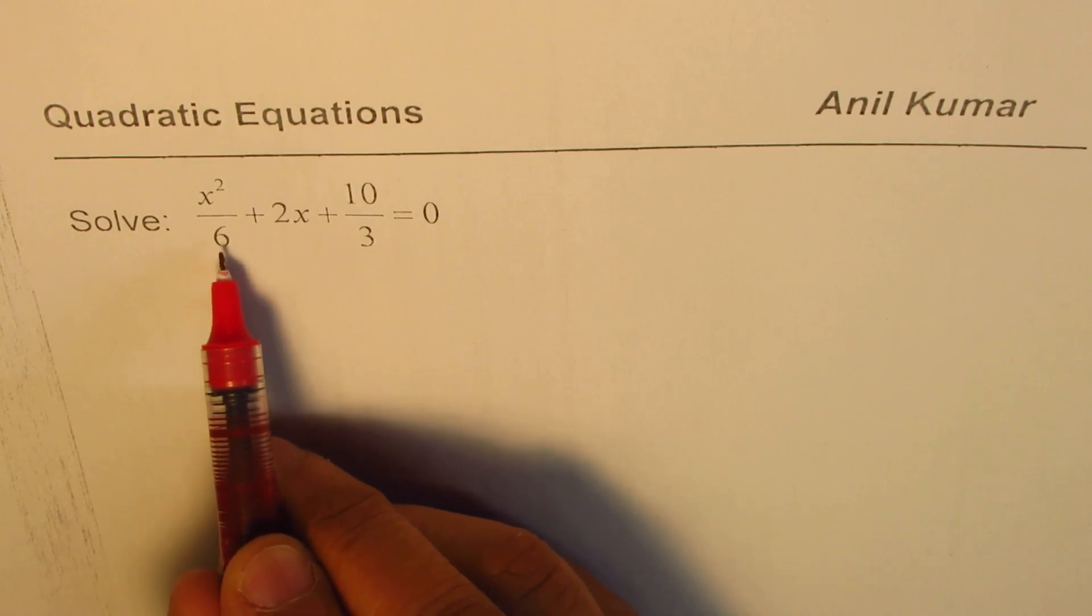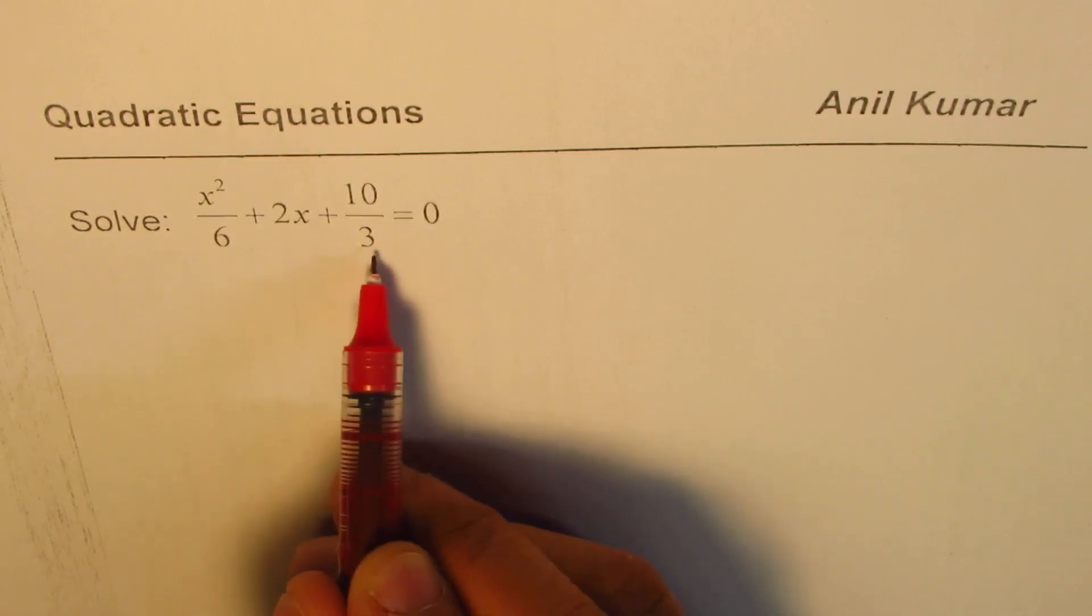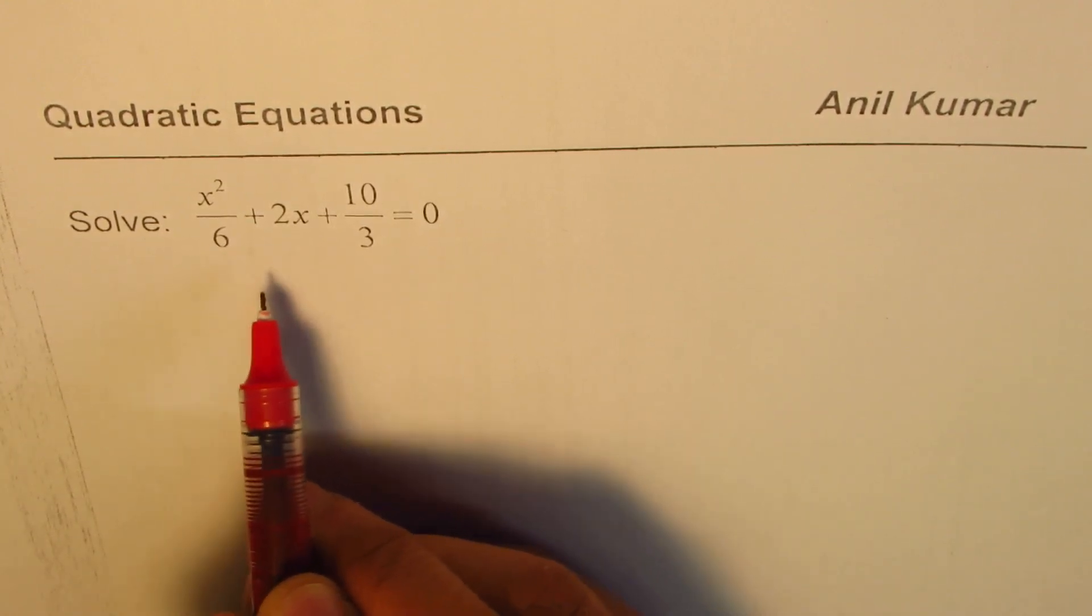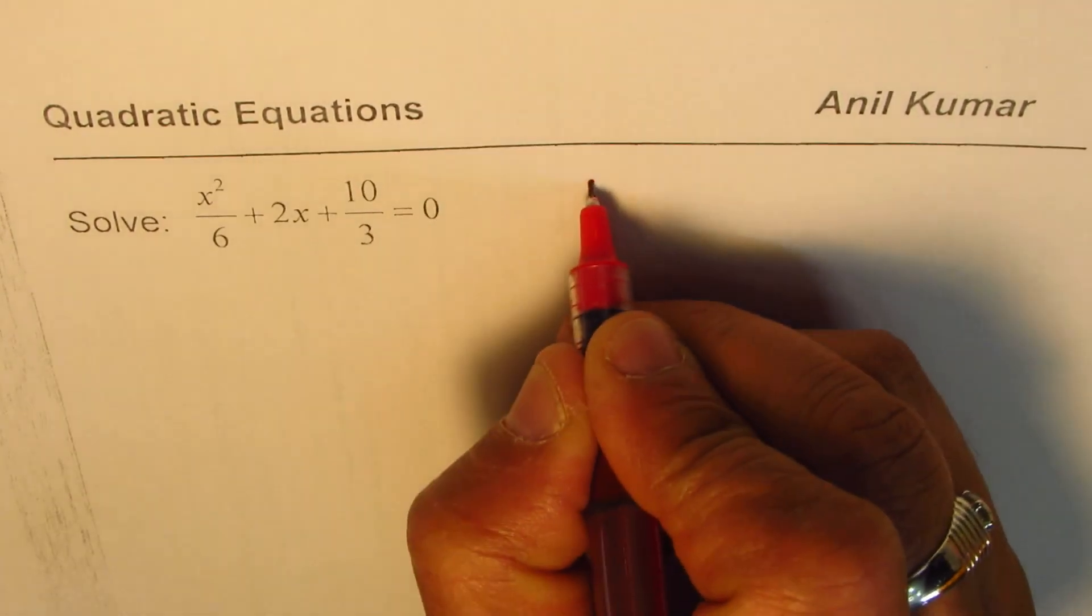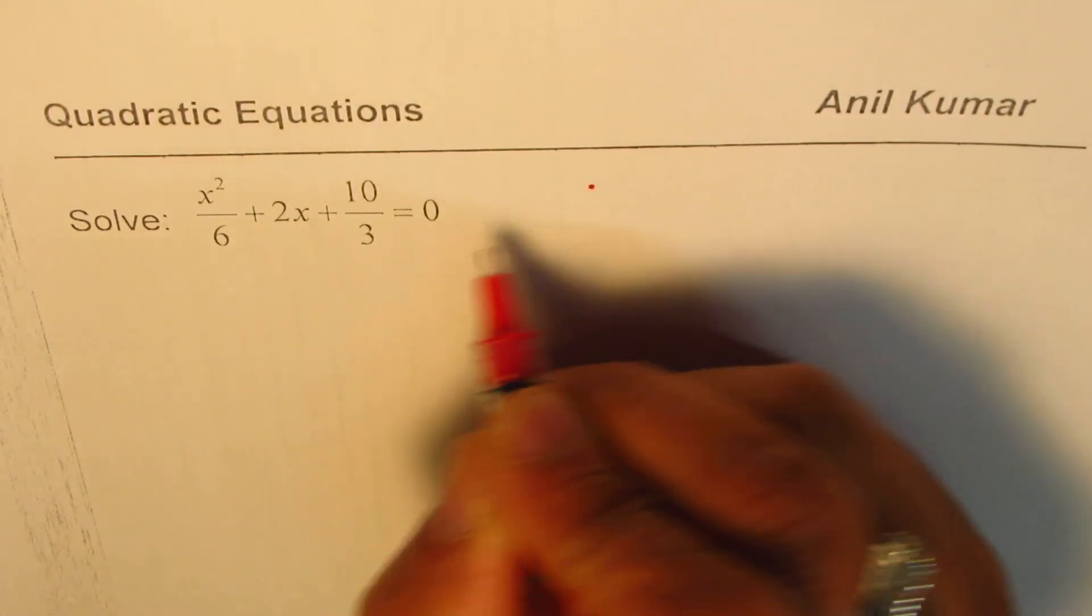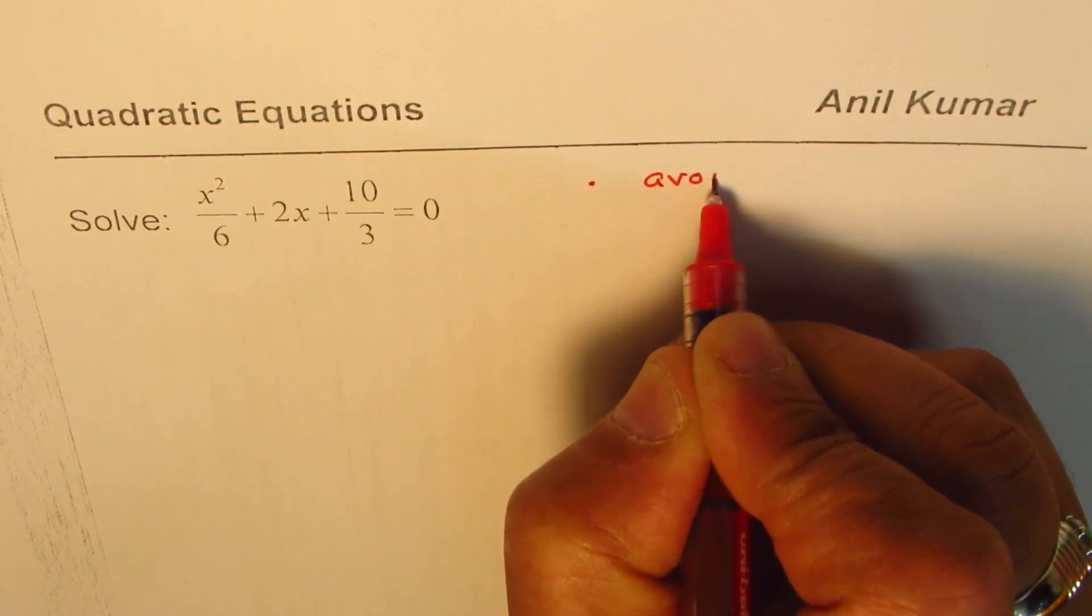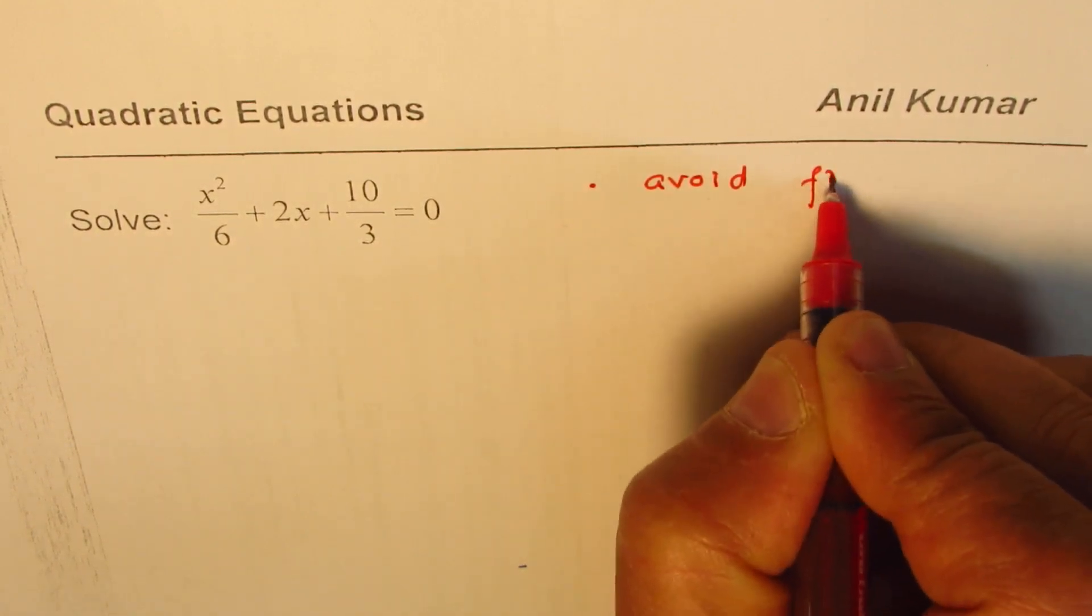As you can see, we have fractions here. They make the equation slightly complicated. So the first step here is to avoid fractions. That is the strategy.